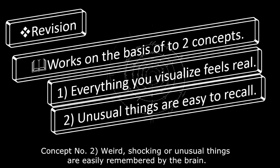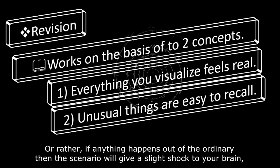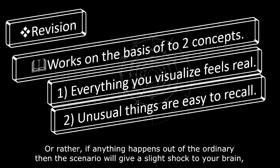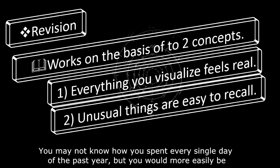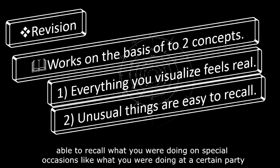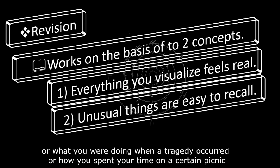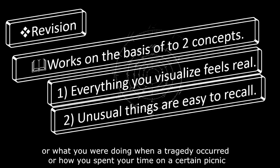Concept number two: weird, shocking, or unusual things are easily remembered by the brain. Or rather, if anything happens out of the ordinary, then the scenario will give a slight shock to your brain, thus causing you to be highly alert for that moment, which will imprint that scene in your head very clearly. So in that sense, it becomes easy to recall. You may not know how you spent every single day of the past year, but you would more easily be able to recall what you were doing on special occasions like what you were doing at a certain party or when a tragedy occurred or how you spent your time on a certain picnic or what you were doing on your birthday last year.